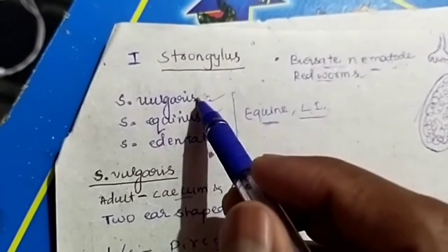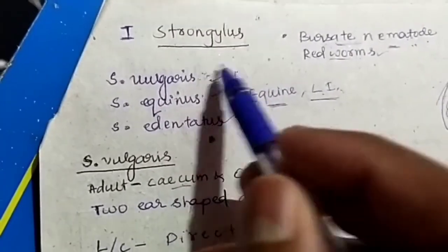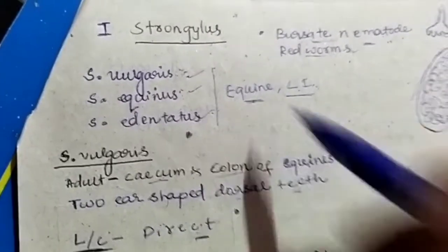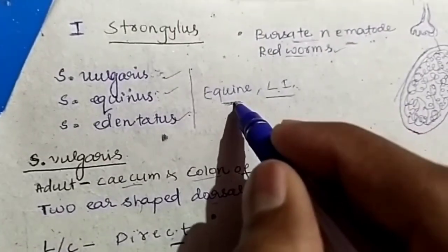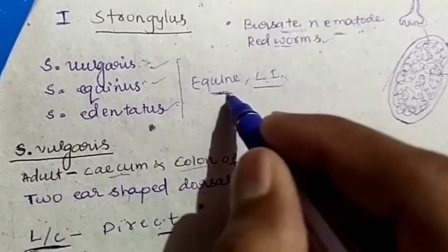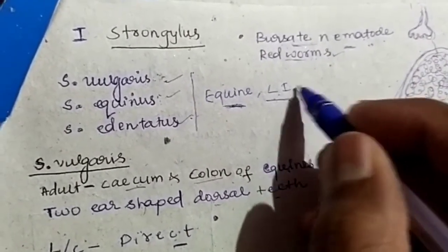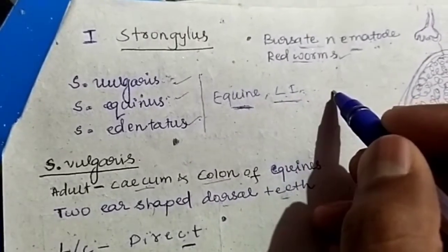The genus Strongylus contains three species: Strongylus vulgaris, equinus, and edentatus. These are nematodes of equine, and their predilection site is the large intestine, specifically in the cecum and colon of the equine.